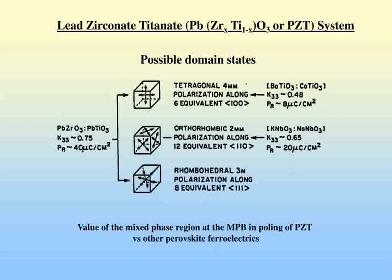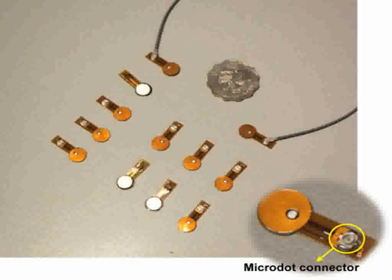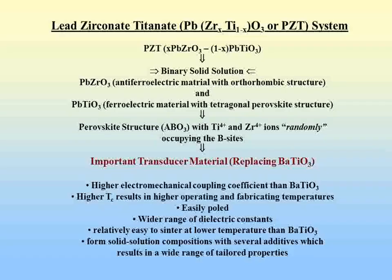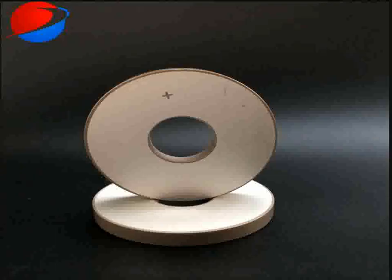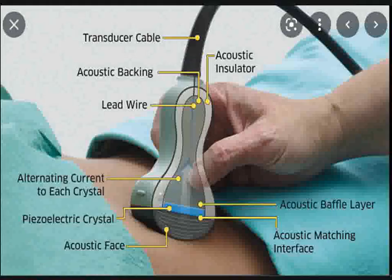Hard and soft PZTs generally differ in their piezoelectric constants. Piezoelectric constants are proportional to the polarization or to the electrical field generated per unit of mechanical stress, or alternatively as the mechanical strain produced per unit of electric field applied. In general, soft PZT has a higher piezoelectric constant but larger losses due to internal friction. In hard PZT, domain wall motion is pinned by impurities, lowering the losses in the material but at the expense of a reduced piezoelectric constant.